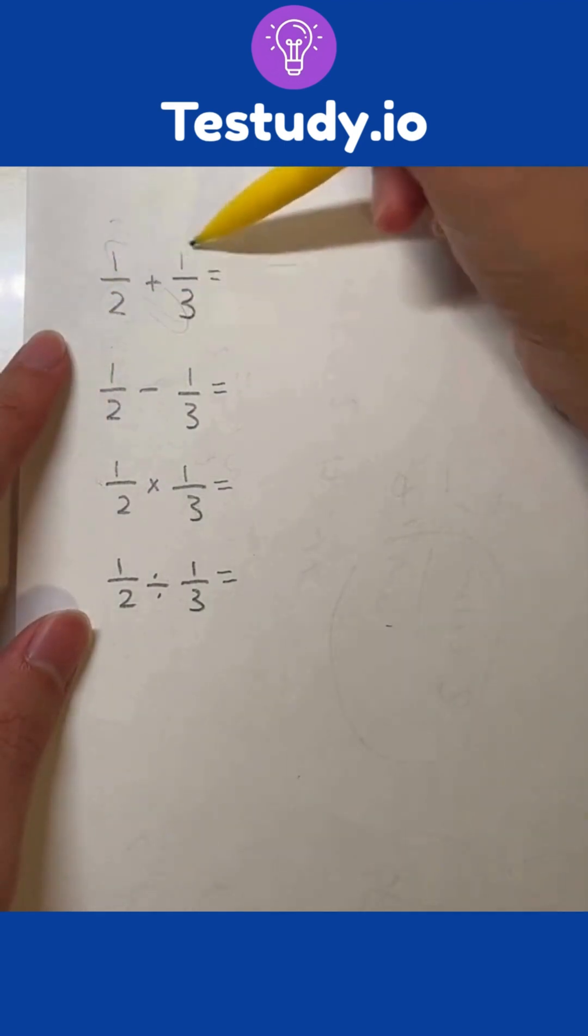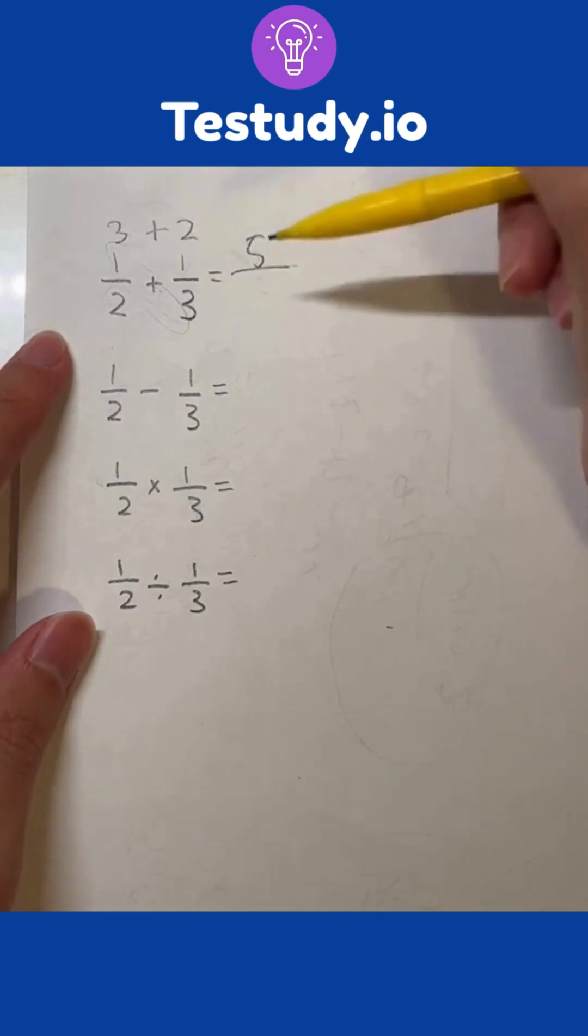What I do is cross multiply. One times three is three. One times two is two. Bring up the operation. Three plus two is five. That's my numerator.